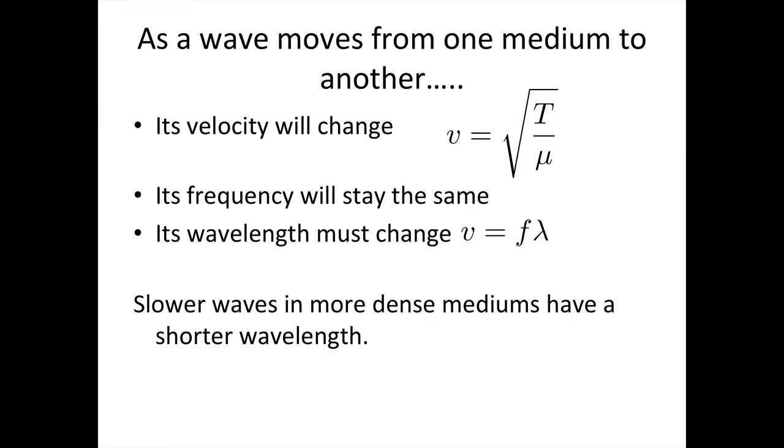OK, so in summary, as a wave moves from one medium to another, its velocity will change. We knew that. We derived that at the start of this lecture. Now, the important thing is its frequency stays the same. So this f is constant. It doesn't depend on the medium. Now, that means that its wavelength must change. If v equals f lambda, then if the frequency is staying the same and the velocity is changing, then the wavelength has to change as well. So slower waves in more dense mediums have a shorter wavelength.